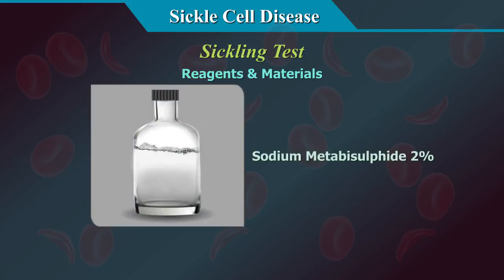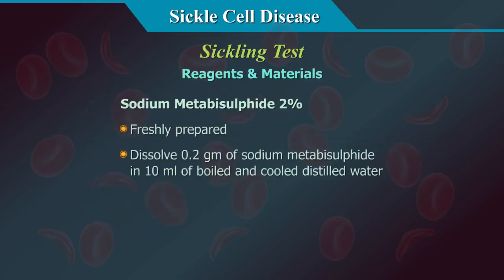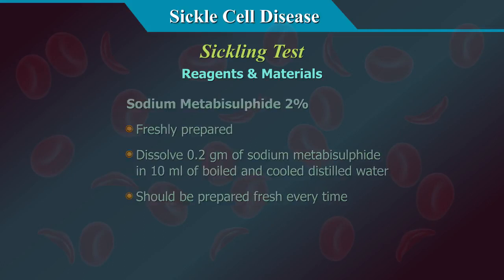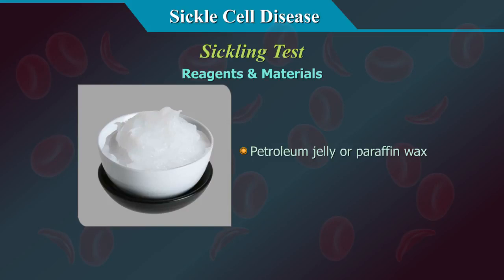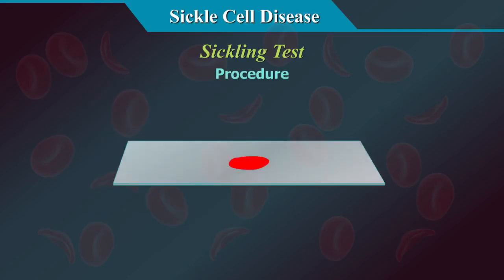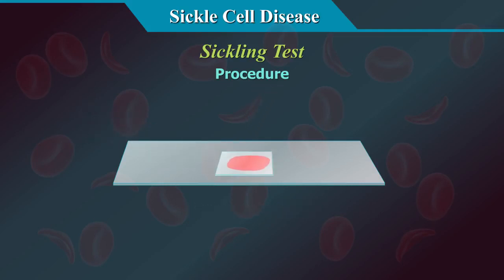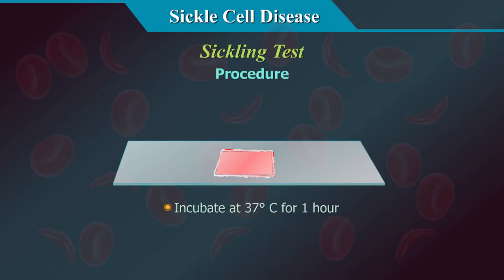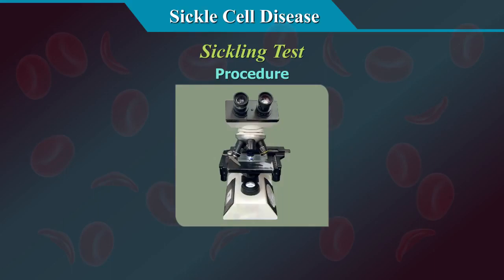Reagents and materials: (1) Sodium metabisulphite 2%, freshly prepared — dissolve 0.2 grams of sodium metabisulphite in 10 ml of boiled and cooled distilled water; it should be prepared fresh every time. (2) Petroleum jelly or paraffin wax. (3) Glass slide and cover slip. Procedure: place a small drop of fresh anticoagulated blood on a slide, add one drop of sodium metabisulphite, and cover immediately with a cover slip. Seal the moist preparation with petroleum jelly or paraffin wax, place in a wet chamber, and incubate at 37°C for one hour. Examine under low and high power objectives of a microscope to look for sickling.